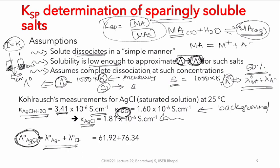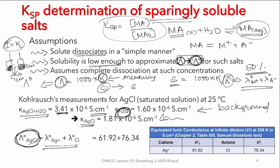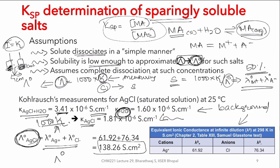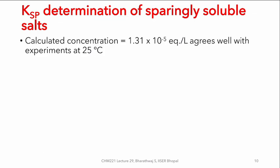As approximated earlier, λ°(AgCl) is the sum of the independent migrations of Ag⁺ and Cl⁻. Looking at the tables from the earlier class, this comes to 138.26 S·cm²/equivalent. Once λ° and κ are determined, s = 1000κ / λ°. For this case the measured solubility ends up as approximately 1.31 × 10⁻⁵ equivalents per liter.